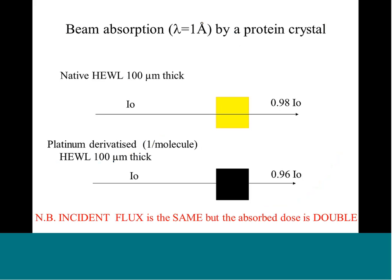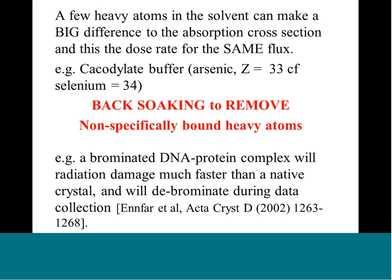What can you do about this as an experimenter? If you have heavy atoms in your solvent that are not contributing to the diffraction pattern and not helping you solve your structure, it's a really good idea to try back-soaking to remove them. For instance, cacodylate buffer has arsenic in it — Z=33, very similar cross-section to selenium — and brominated DNA–protein complexes will damage much faster than non-brominated ones.